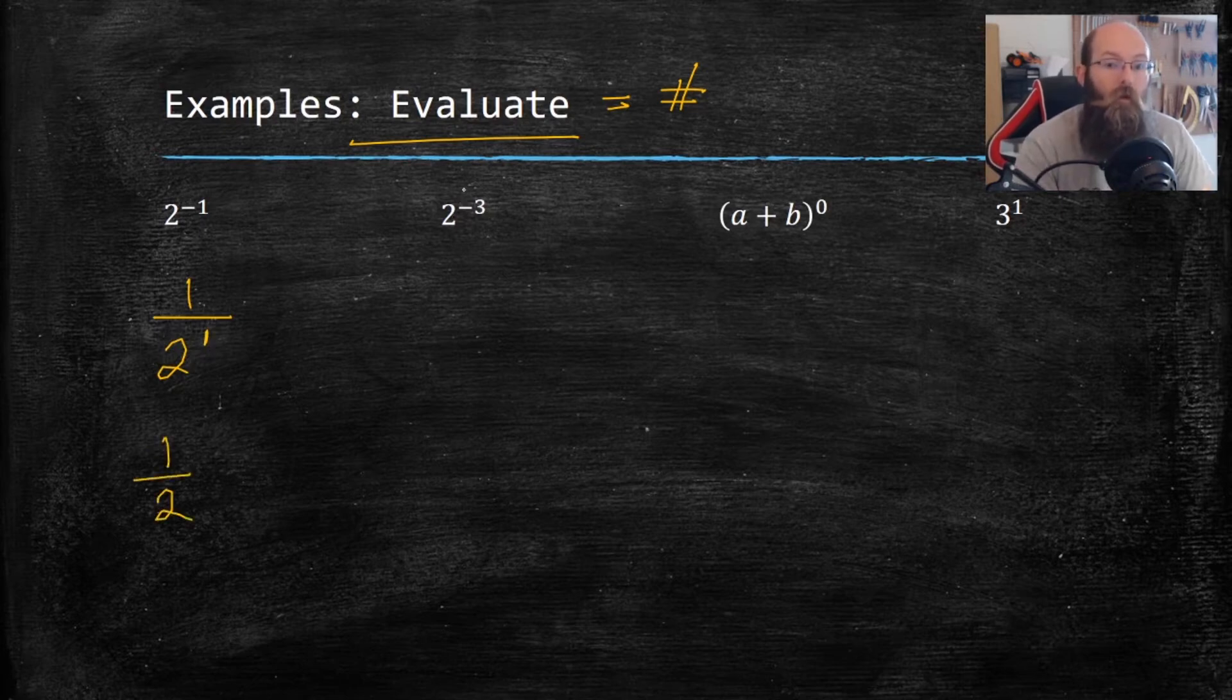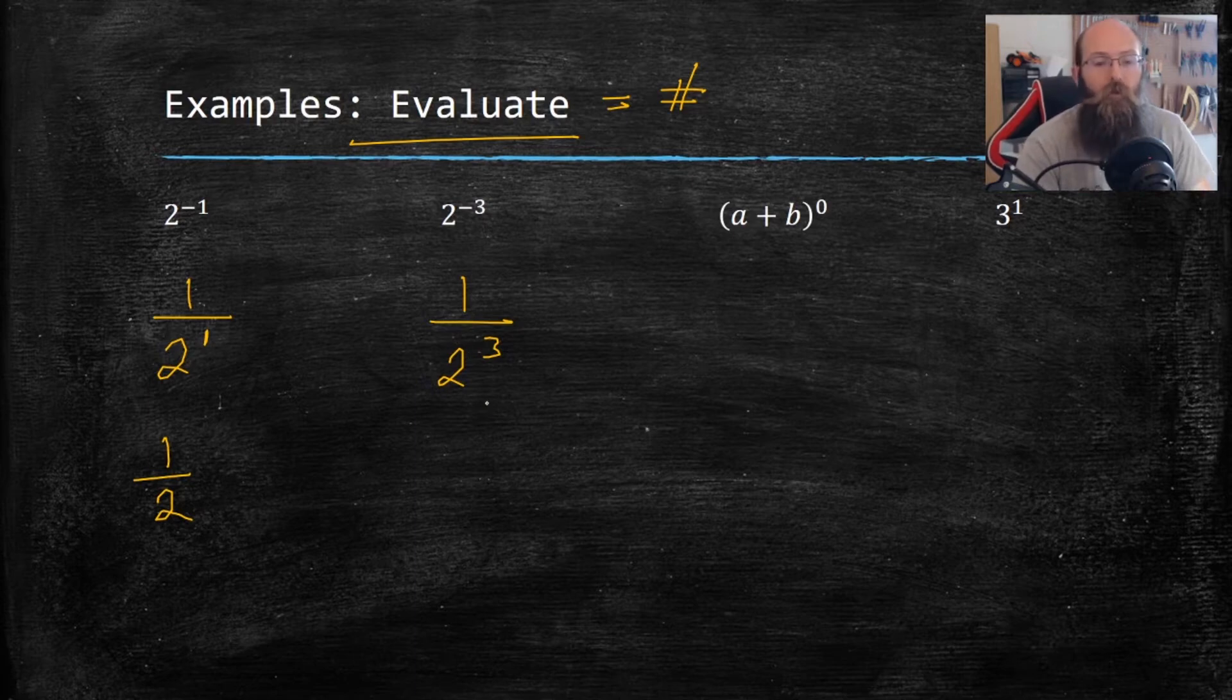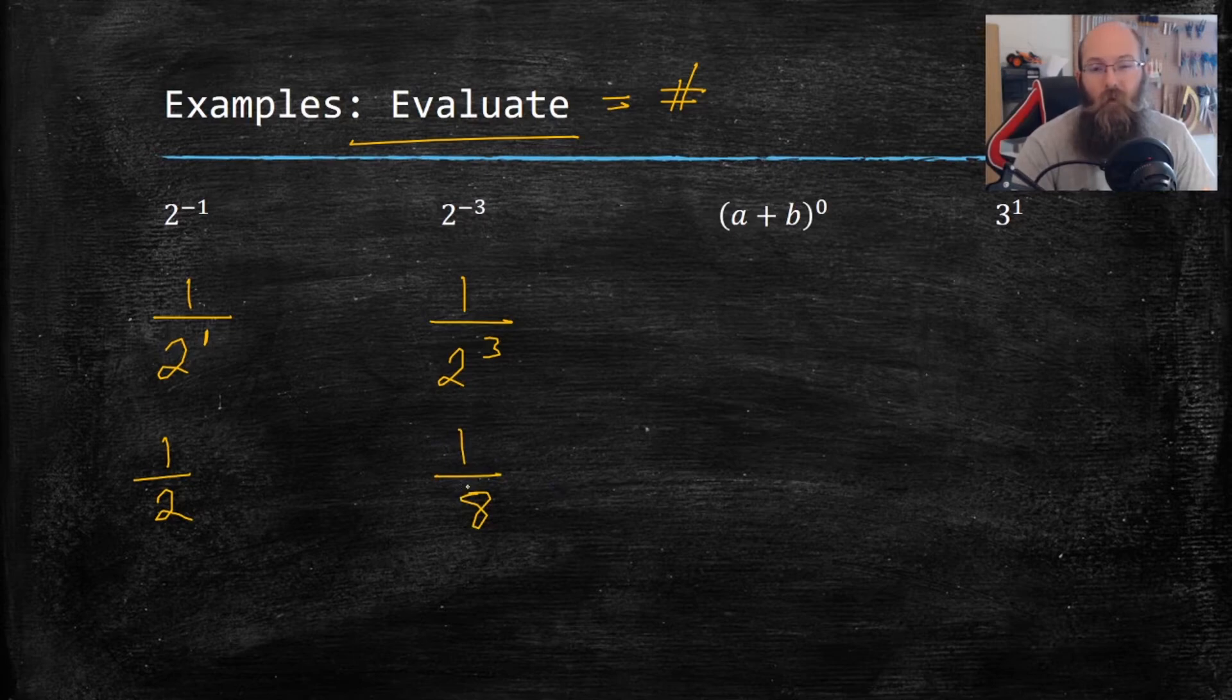Now I have 2 to the third power, but it's a negative, which means I have 2 to the third power as a denominator to a fraction. And 2 cubed is 2 times 2, which is 4 times 2 again, which is 8. So that's one over eight. You can also punch it in a calculator, but most of the time, I want to see this as a fraction.